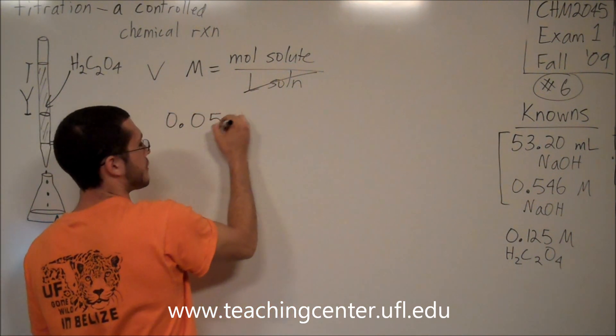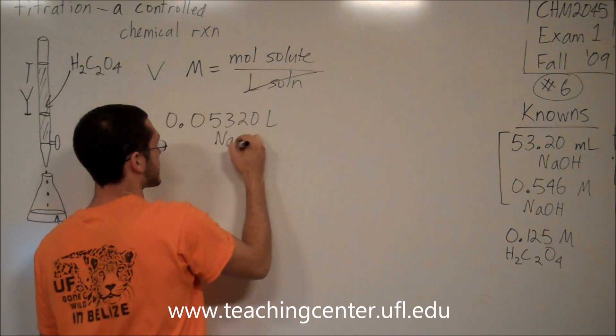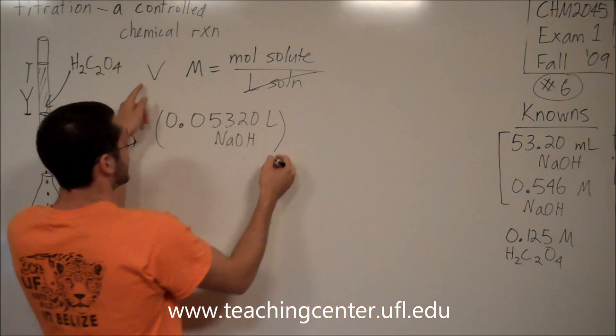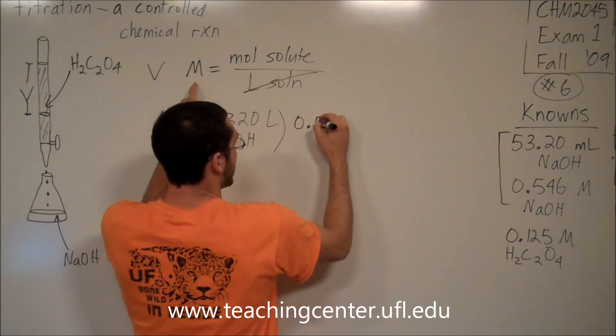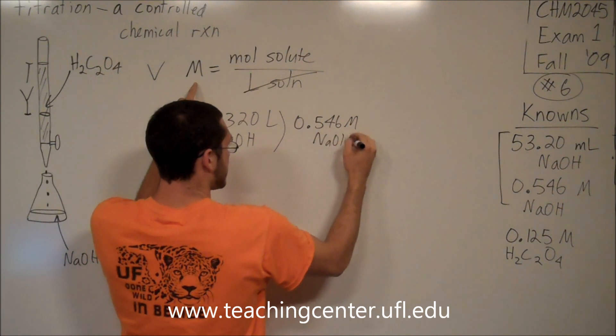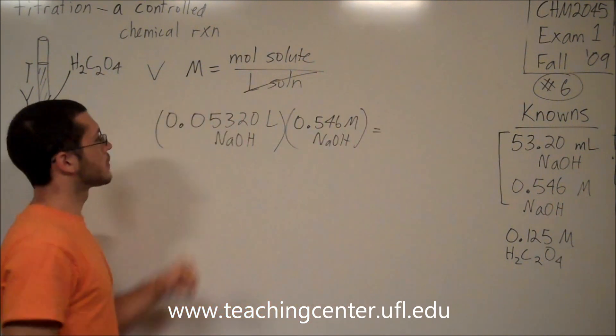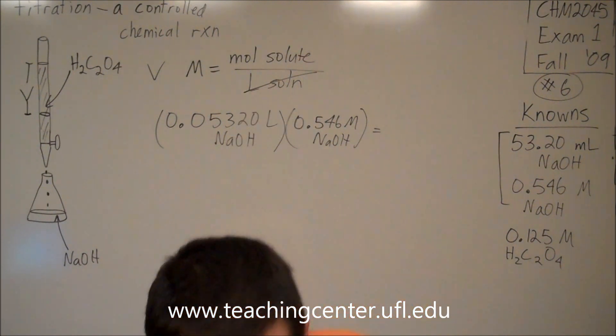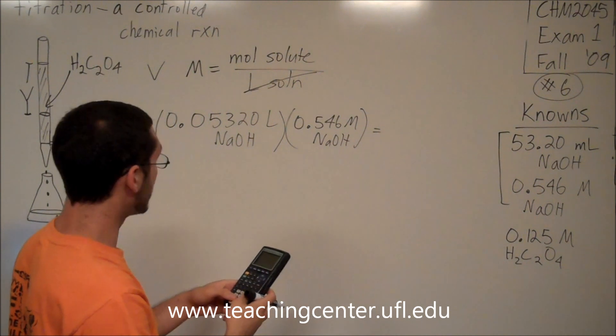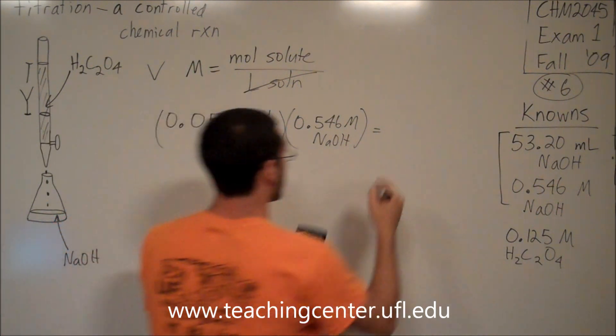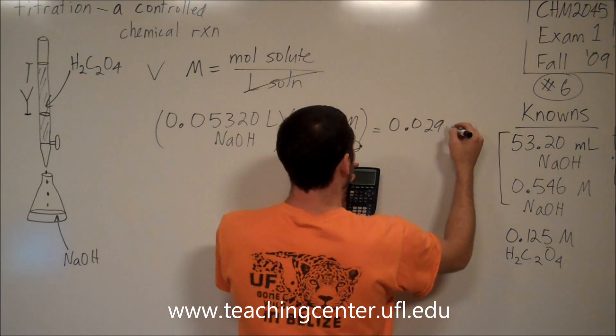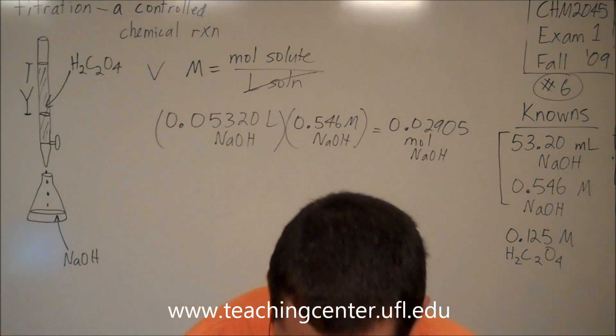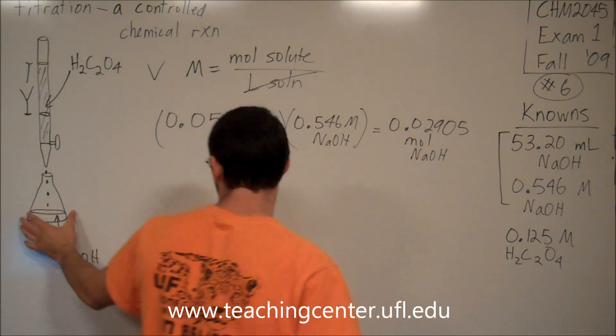So I'm going to start with 0.05320 liters of sodium hydroxide. I just converted my mLs to liters. That's my volume. Now I'm going to multiply by my molarity of sodium hydroxide, 0.546 molar sodium hydroxide. If I punch this out, I get 0.0290 moles of sodium hydroxide. So I know how many moles of sodium hydroxide are down here in my Erlenmeyer flask.